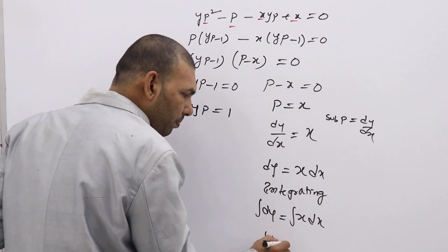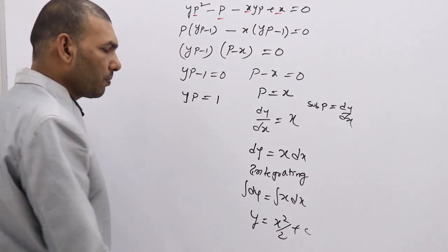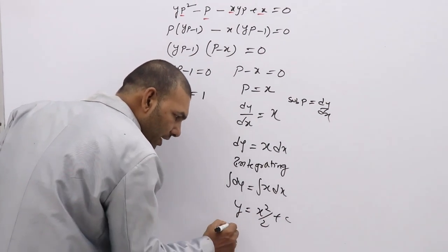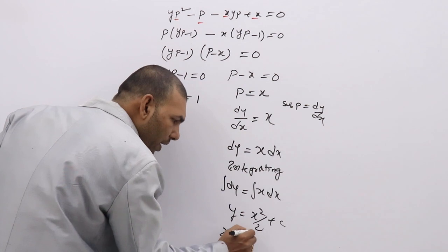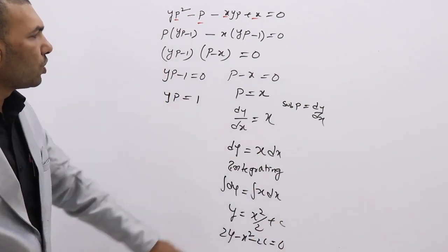Integral dy is y. Integral x dx, x squared by 2 plus c. So which can be written like this if you take 2 LCM and if you send that side, 2y minus x squared minus 2c equal to 0 is first solution.